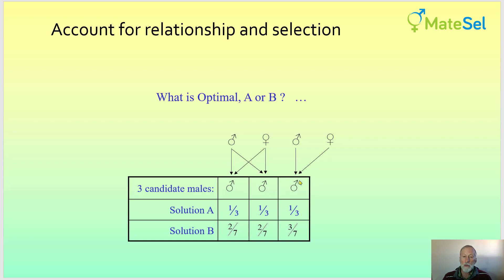However, with knowledge of pedigree and hence the numerator relationship matrix, if the first two males are full sibs to each other, and the third male according to the shallow pedigree is unrelated, then this male is more useful because it's more new blood and it should have more contribution than the other two.